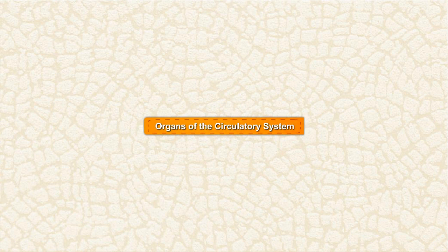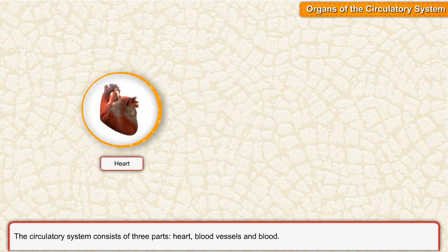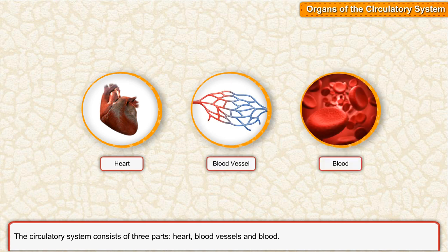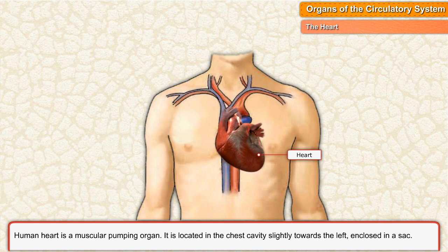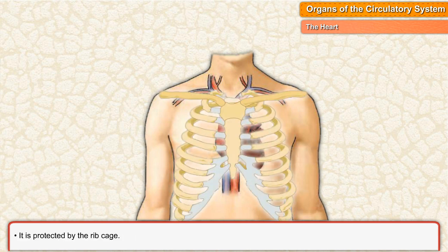The circulatory system consists of three parts: heart, blood vessels, and blood. The human heart is a muscular pumping organ. It is located in the chest cavity, slightly towards the left, enclosed in a sack. The adult human heart is about the size of a fist.